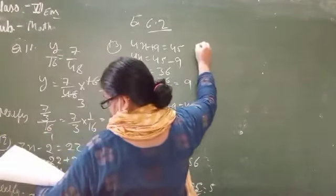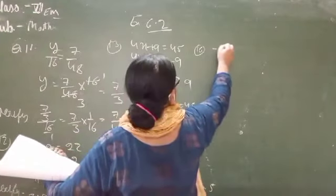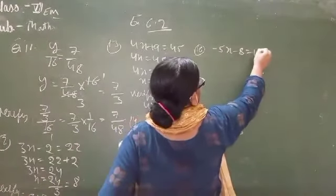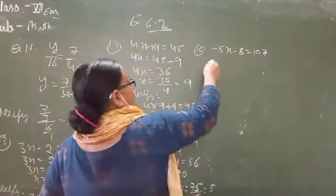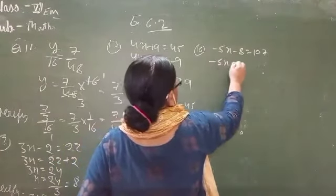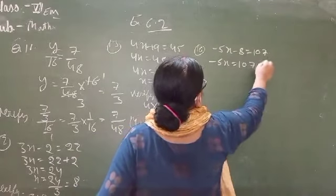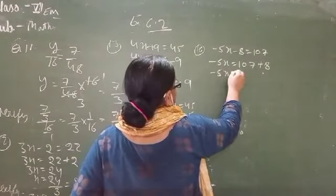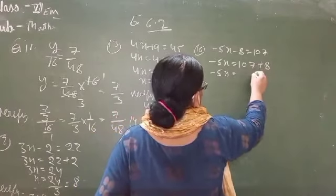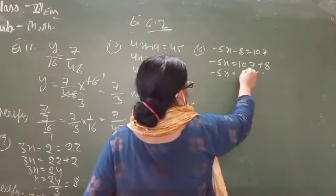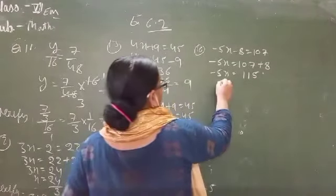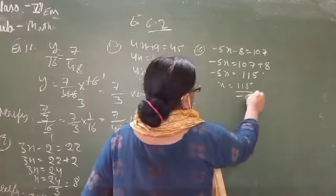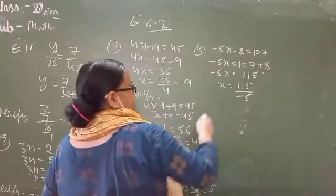Question number 16: minus 5X minus 8 equals 107. Minus 5X equals 107 plus 8, which is 115. So X equals 115 divided by minus 5. X equals minus 23.